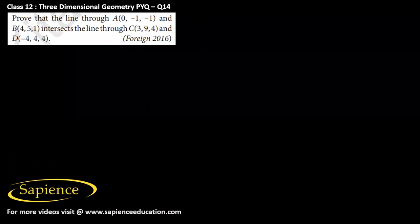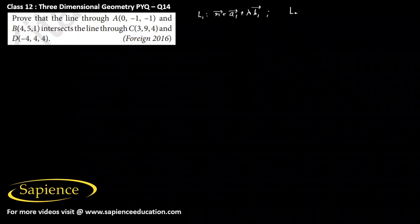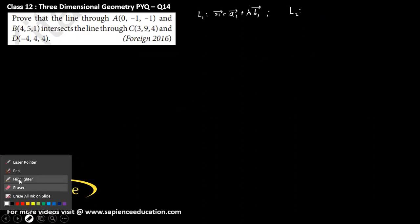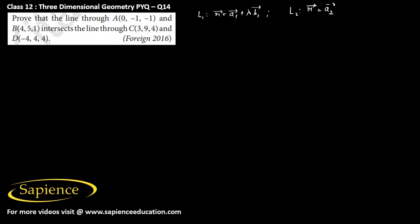It has been told to prove that the line through the points A and B intersects the line through the points C and D. First, if the equation of line L1 is r vector equals a1 vector plus lambda b1 vector, and the equation of line L2 is r vector equals a2 vector plus mu b2 vector, then if L1 intersects L2, we should have a2 minus a1 dot b1 cross b2 equal to 0.